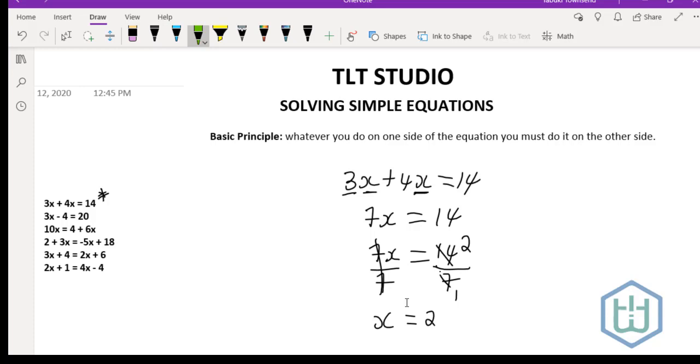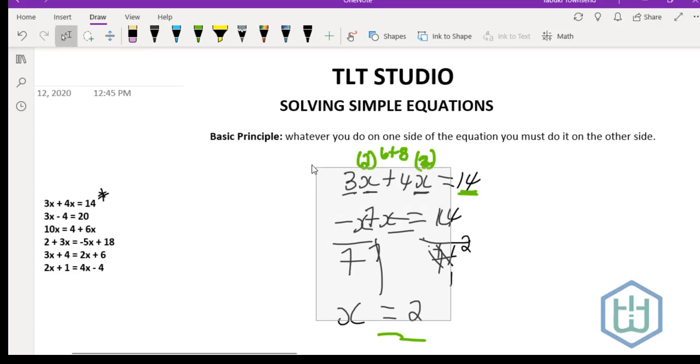It's always good when you can recheck your answers. The value of x here would be 2, so this x here is no longer unknown. This is 3 times 2 which is 6, and this right here is 4 times 2 which is 8. 6 plus 8 equals 14, so this answer is indeed correct. That's how you work a question like that.